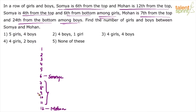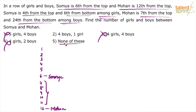Look at the options. The first option has 5 girls and 4 boys — that's 9 persons, eliminated. Second option: 4 boys and 1 girl is possible — there are 5 persons. Third option: 4 girls and 4 boys — eliminated because total should be 5. Fourth option: 4 girls and 2 boys — total is 6, should be 5, eliminated. So from the first statement itself, you are able to eliminate 3 of the options.